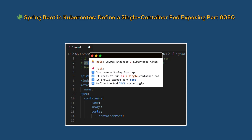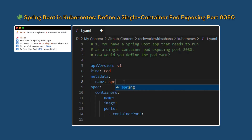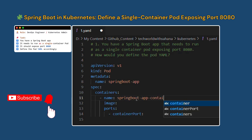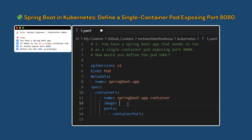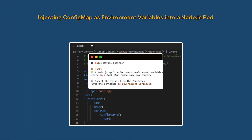As a DevOps engineer, you are given a task to configure a SpringBoot application that needs to run as a single container pod exposing port 8080. How would you define the YAML? First, we will name our pod 'springboot-app', then name the container 'springboot-app-container'. We also need to specify the image — suppose it's stored in a container registry like Docker Hub or a private registry. The image name is 'springboot-app' with version tag '1.0', and we set the container port to 8080.